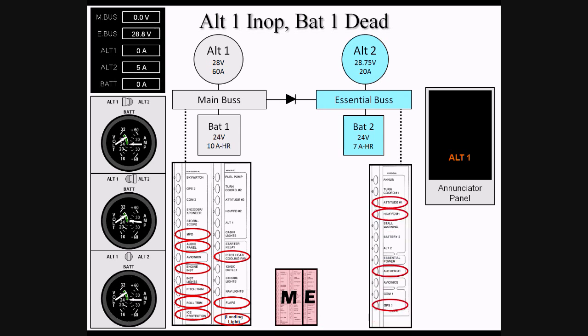Alt-2 will continue to indefinitely power the most critical items on the airplane, including the attitude indicator, HSI or PFD if installed, autopilot, and number one GPS and communication radio.